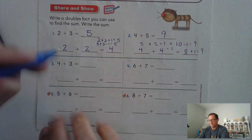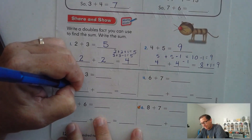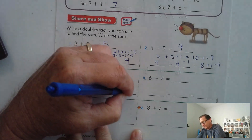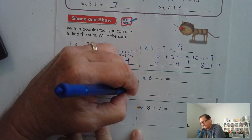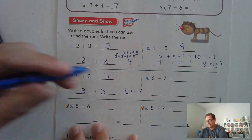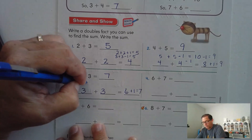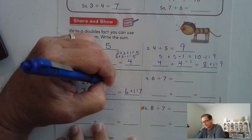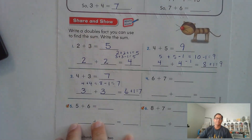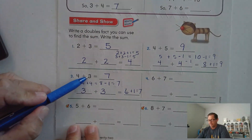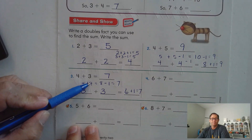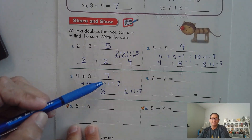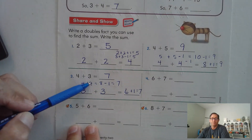4 plus 3: I could use 3 plus 3, which is 6, and 6 plus 1 gives me 7. Or I could say 4 plus 4 equals 8 and then subtract 1. Here I changed the 3 to a 4 and used the double fact 4 plus 4, which is 8, then subtracted the extra 1 that I put on.